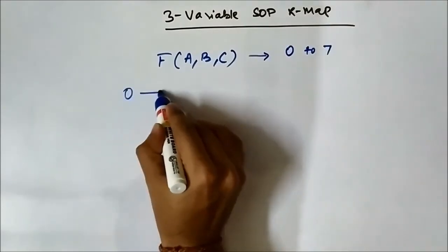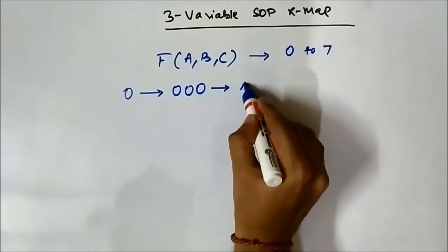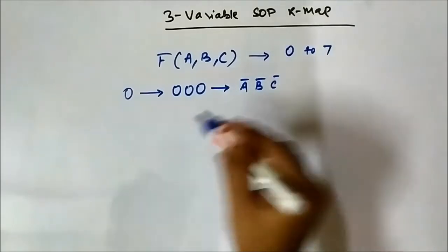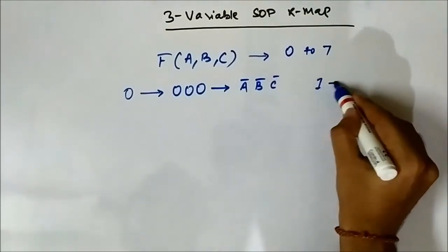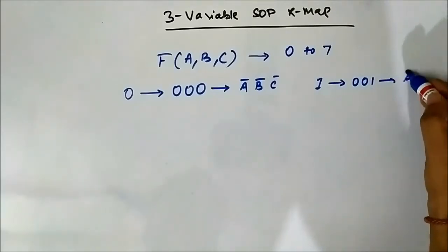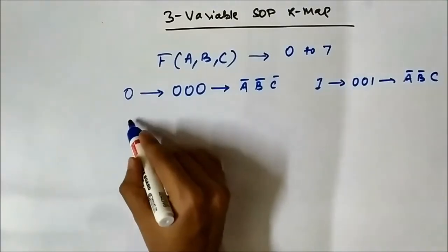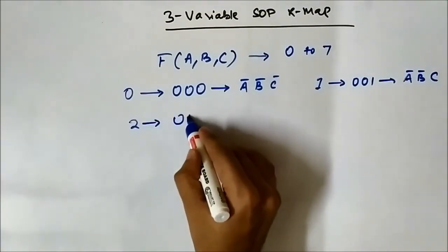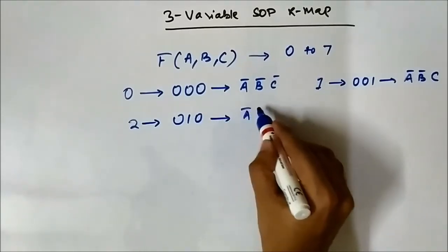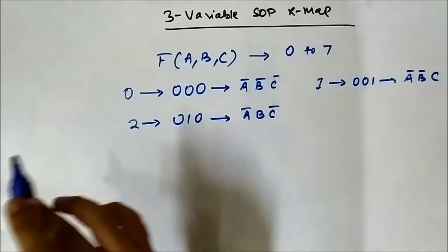So 0 stands for 0,0,0 — that will be A bar, B bar, C bar. Similarly, 1 is 0,0,1 — it will be A bar, B bar, C. Then 2 is 0,1,0 — so it will be A bar, B, C bar, and so on.